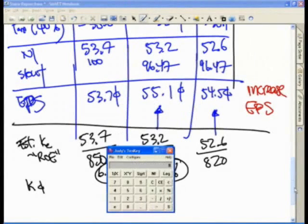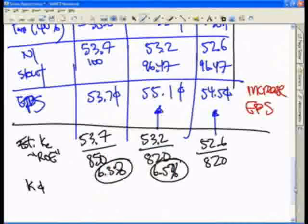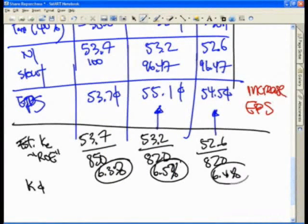$52.6 over $820 is 6.4%. So in all cases here, we now see that we have slightly different ROEs.